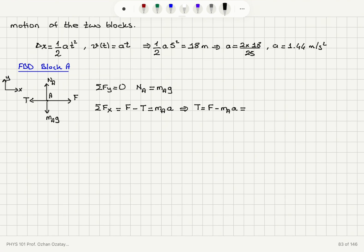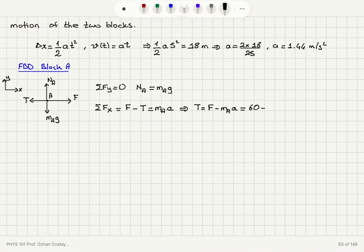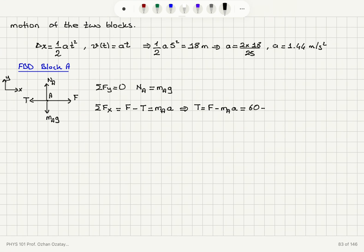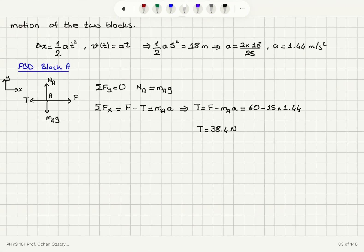The horizontal force is 60 N and the mass of block A is 15 kg. So tension T equals 60 minus 15 times 1.44. The tension in the rope is 38.4 N, given to three significant figures.